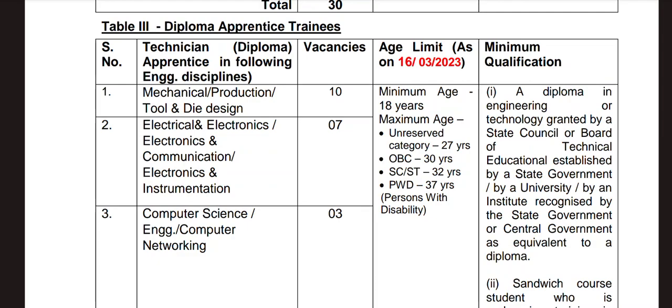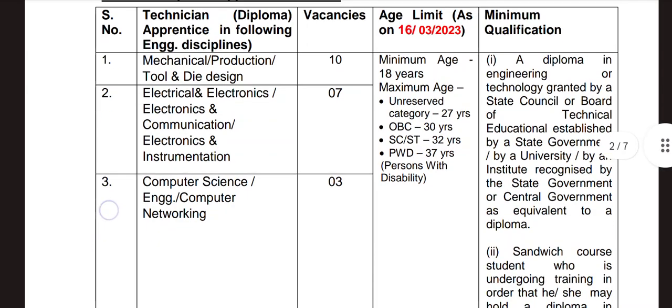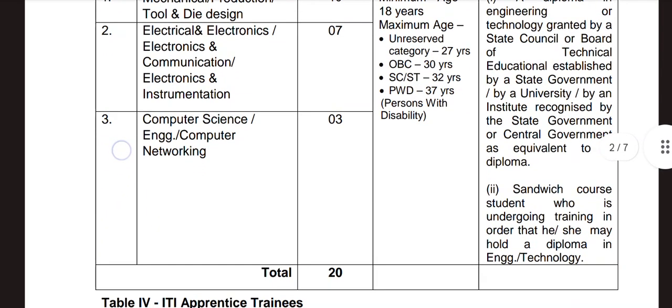A minimum qualification is a diploma in engineering or technology granted by a state council or board of technical education established by a state government. That is applicable to a student who is undergoing training and may hold a diploma in engineering technology.